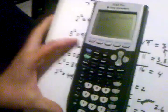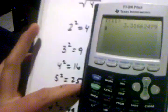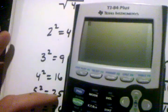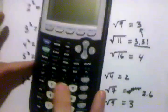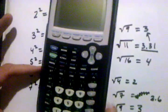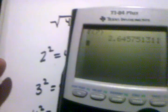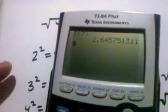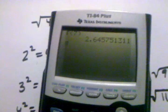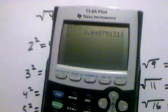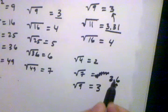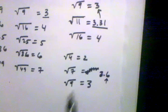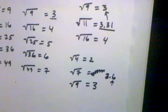The square root of seven equals two point six four five seven five one three one one — it goes on forever. But just taking the number to the tenths place, sure enough just by guessing I was able to get the same number that's on the calculator.